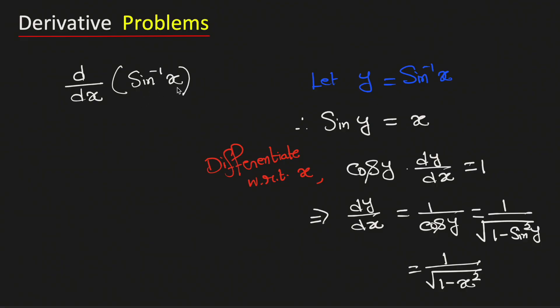Therefore, the derivative of sin inverse x with respect to x is equal to 1 over square root of 1 minus x square. And this is our final answer.